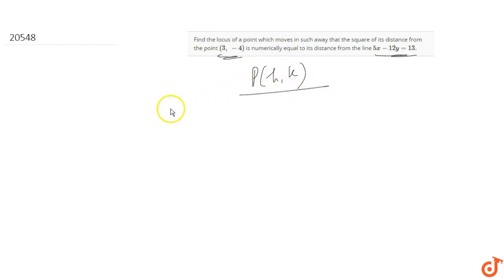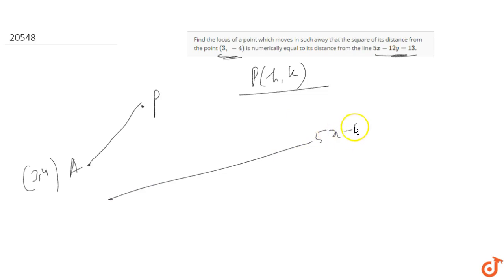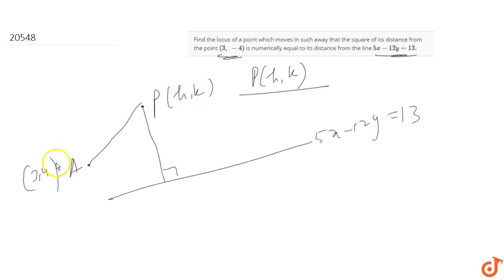It is given that the square of the distance of point P from the point A(3, -4) is numerically equal to the distance of P from the line. There is also a line 5x minus 12y equals 13. So this distance from the line will be equal to the square of the distance between P(h,k) and A(3, -4).